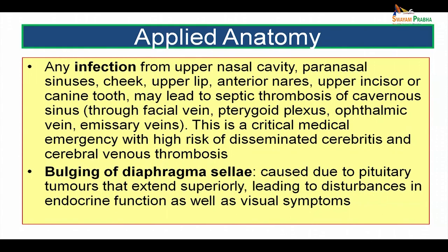Infection from the upper nasal cavity, paranasal sinuses, cheek, upper lip, anterior nares, or upper incisor or canine teeth may lead to septic thrombosis of the cavernous sinus through the communications the cavernous sinus has with the facial vein, the pterygoid plexus of veins, ophthalmic veins, and emissary veins. This is a critical medical emergency with high risk of disseminated cerebritis and cerebral venous thrombosis. Bulging of the diaphragma sellae is caused by pituitary tumors that extend superiorly, leading to disturbances in endocrine function as well as visual symptoms.